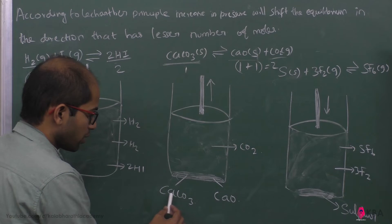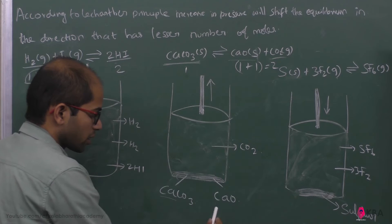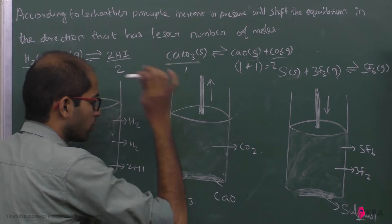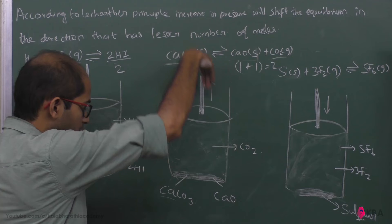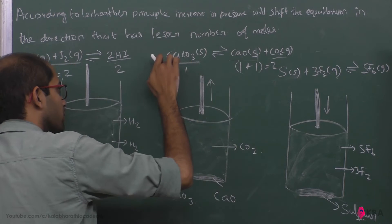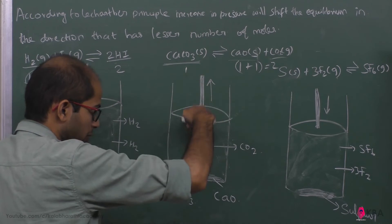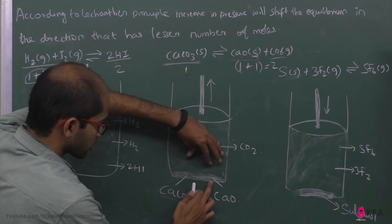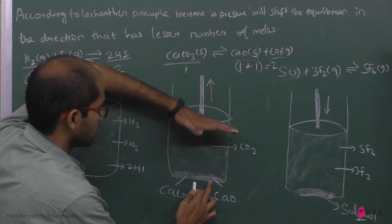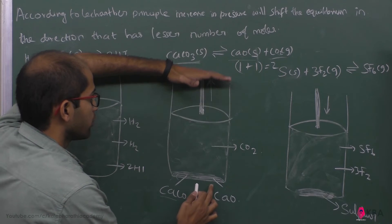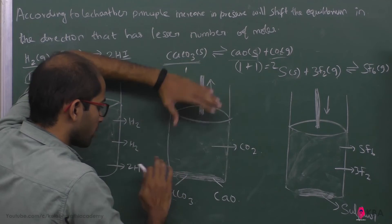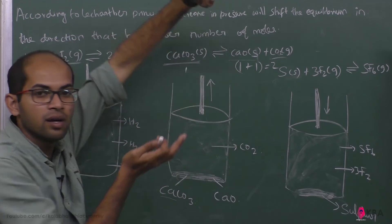Practically, you can think about it this way: calcium carbonate is in the solid state and calcium oxide is also in the solid state. Carbon dioxide is the gaseous product filling the container. If pressure increases, carbon dioxide reacts back with calcium oxide, reducing the yield. So increasing volume (decreasing pressure) favours forward reaction and increases CO₂ yield.